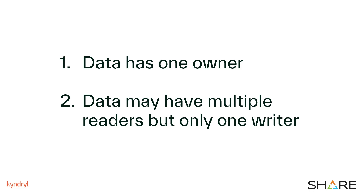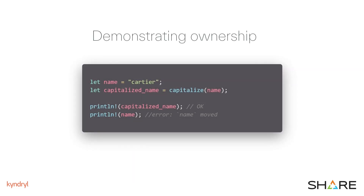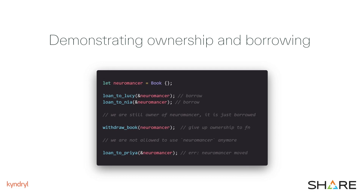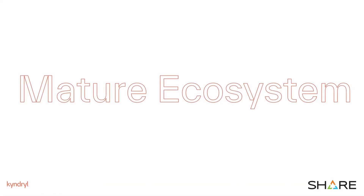Now let's look at an example of how this works in practice. In Rust, you don't pass a variable into a function — you give ownership of the variable to that function. In this example, when we give variable 'name' to the 'capitalized' function, it's gone. In this next example, let's imagine we run a library. On lines three and four, we are using the concept of borrowing to pass the 'Neuromancer' book variable to functions. When we use this method, we guarantee two things: one, the function that is borrowing the variable cannot change it; and two, the function can only access the variable data until the function has finished.